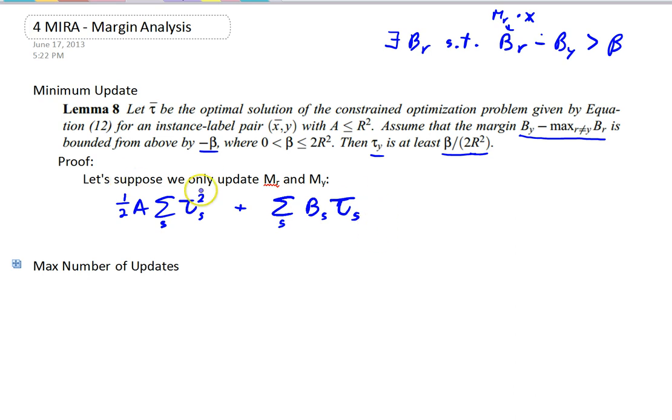So, what we're going to do is we're just going to be updating these two vectors, which means all the tau's are going to be zero, except for tau r and tau y. And then we're going to get this result, and then we'll figure out if we allow the other tau's to be non-zero, then tau y will be even bigger.